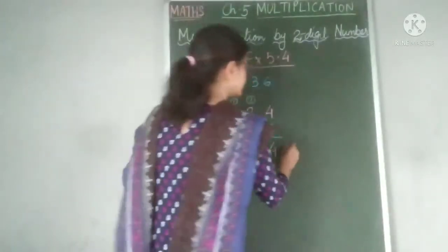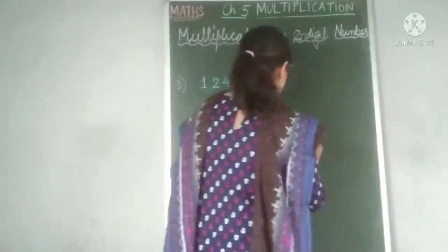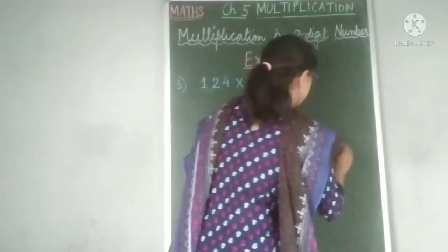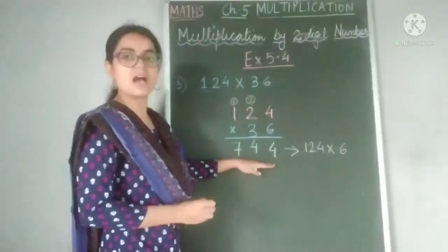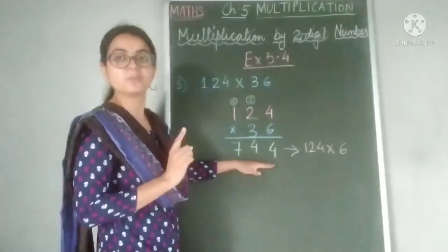So children, this is the first partial product. That is, this is the result of 124 multiplied by 6. This is our first partial product. Not the final answer, but the partial product.